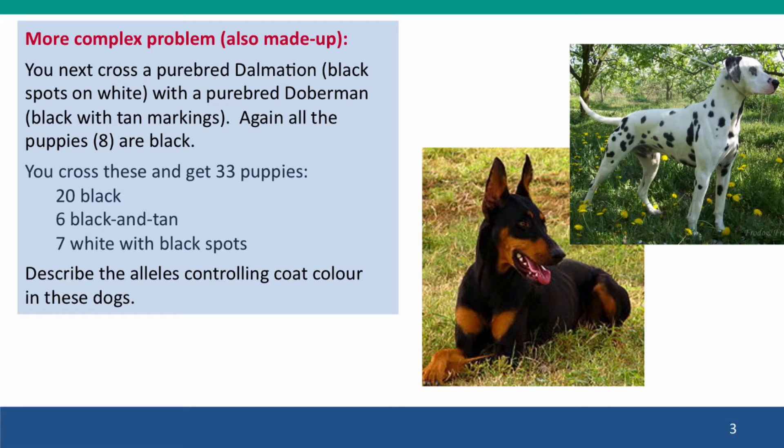In this problem, we're again working with crossing dogs. Only now, instead of crossing the Dalmatian with a black Labrador, we're crossing the Dalmatian with a Doberman. Dobermans have black and tan markings. And again, all the puppies are black, we do a second generation, and we get puppies with a mixture of phenotypes. Our first job is to pick a hypothesis that we're going to test.